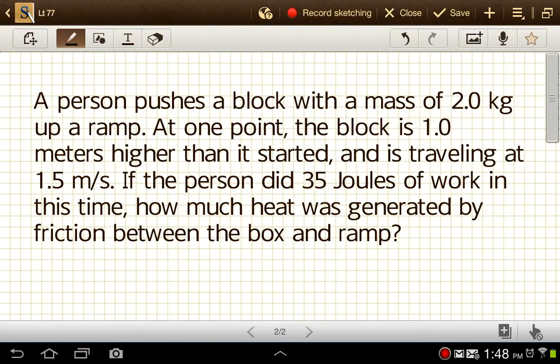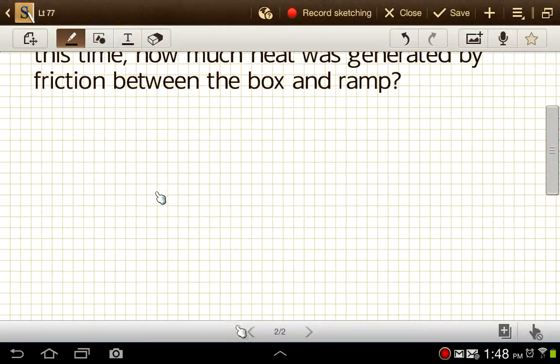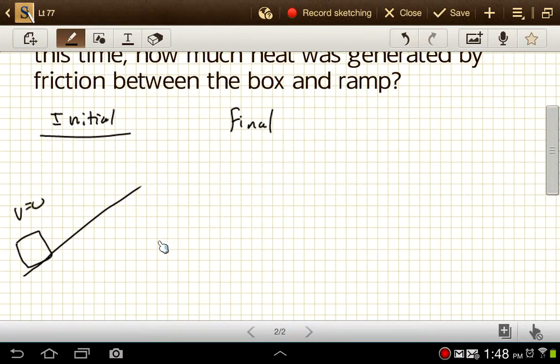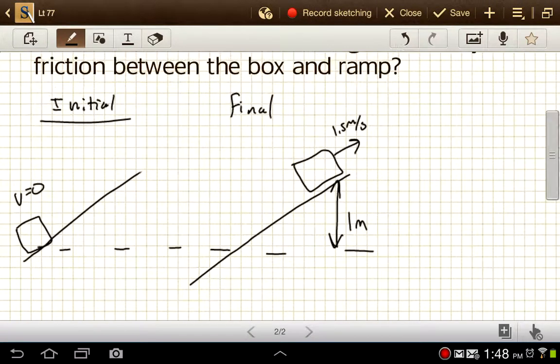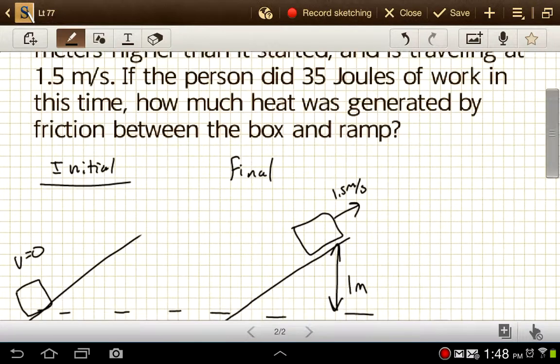So we have a person pushing a block going up a hill or up a ramp. So if we think about the initial and final states here, initially that box is down at the bottom of the ramp. V is zero here. And then in our final state, we've got our box. It's moving up the ramp now at 1.5 meters per second. It's up at a height of 1 meter.